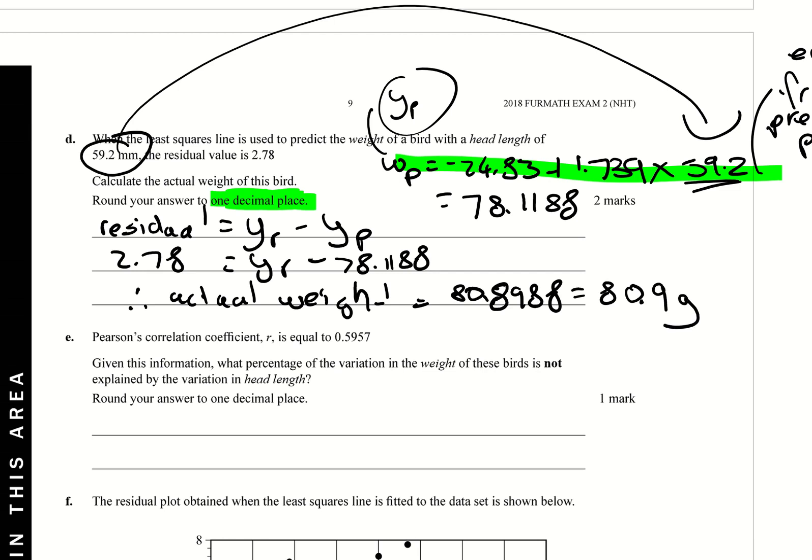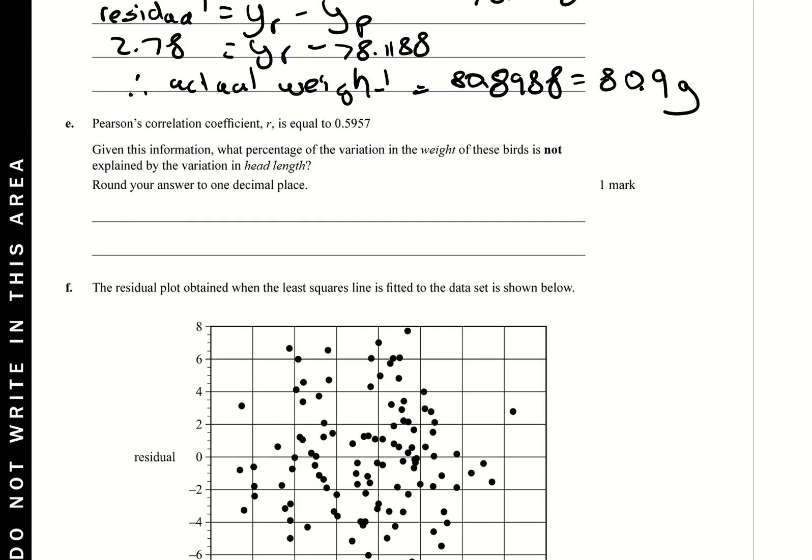Next one, Pearson's correlation coefficient r is equal to 0.5957. Given this information, what percentage of the variation in the weight of these birds is not explained by the variation in head length? This is a key point. A lot of times most of the questions you often see ask what is the variation, and that's asking you for r squared and that's the value you use. In this case it's asking you to work out r squared and then tell me what the difference to that is. R squared times 100 gives you a percentage. So if I did 0.5957 and square it and then multiply it by 100, I'll get 35.5%. That would be saying 35.5% of the variation in the weight of these birds can be explained by the variation in head length.